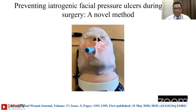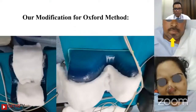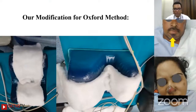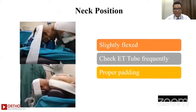One modification from Oxford University: if surgery exceeds six hours, they apply a Bactigras dressing before positioning the patient prone, to help avoid pressure sores. We have slightly modified this Oxford method by using cotton above the horseshoe, which has helped us greatly in reducing pressure sores of the chin and forehead.